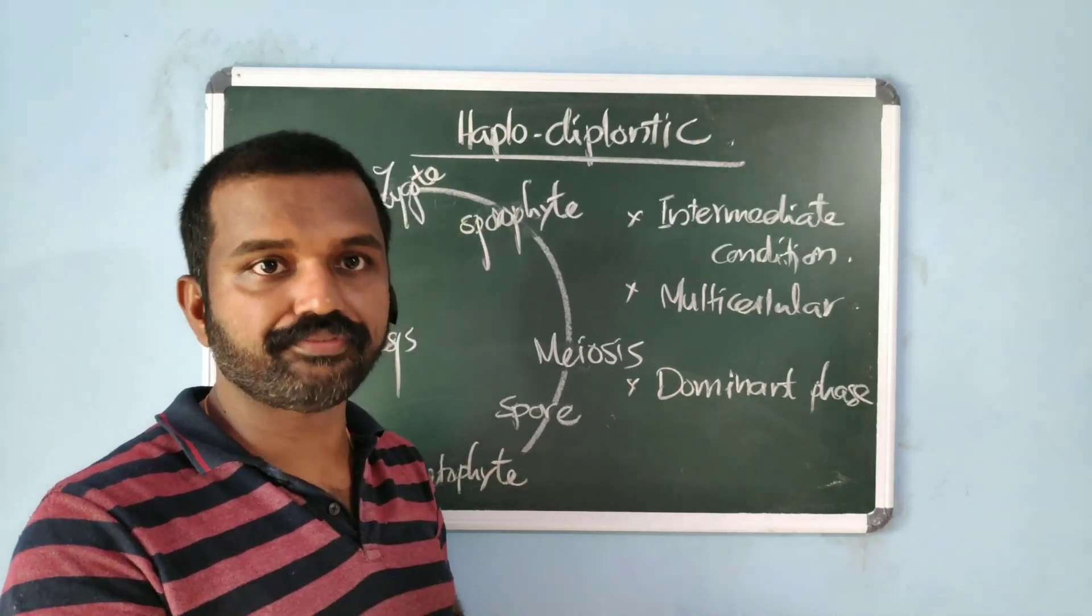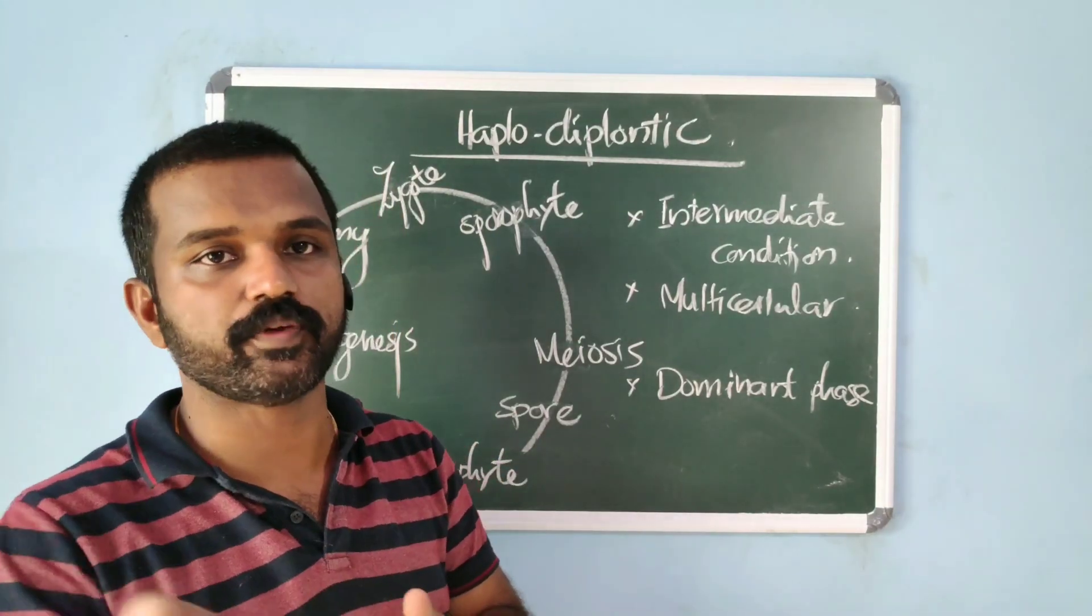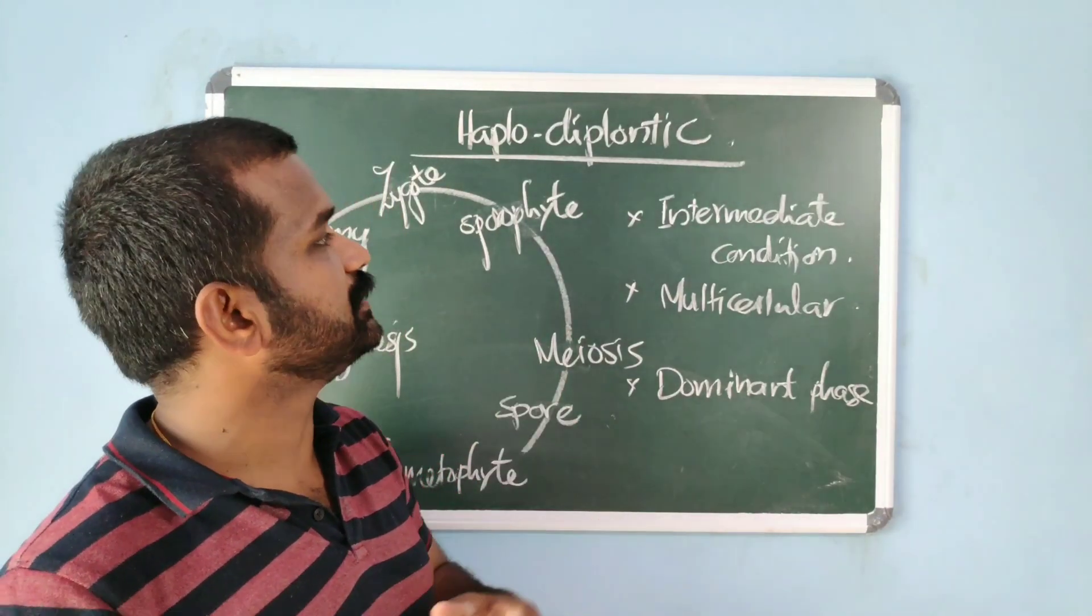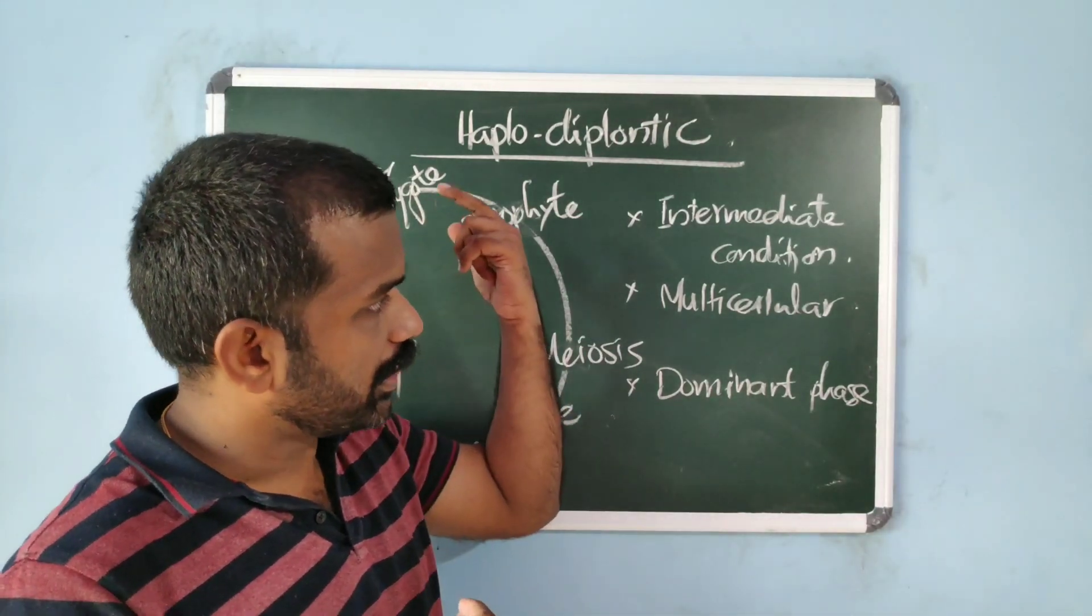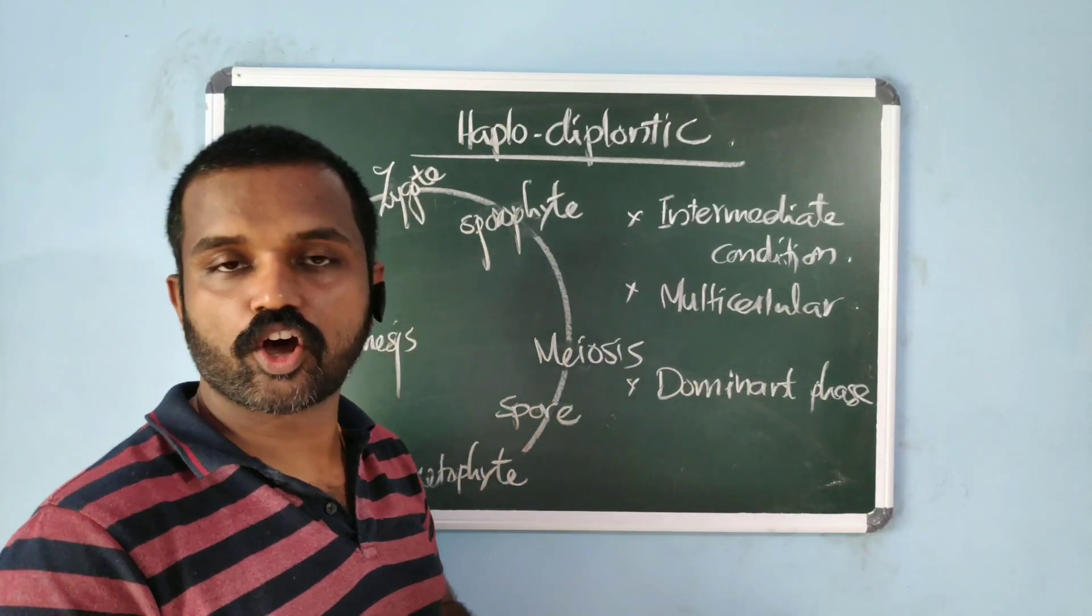In case of bryophytes, we have already seen in the previous video, in bryophytes gametophyte is the dominant plant body, whereas in pteridophytes, sporophyte is the dominant plant body.